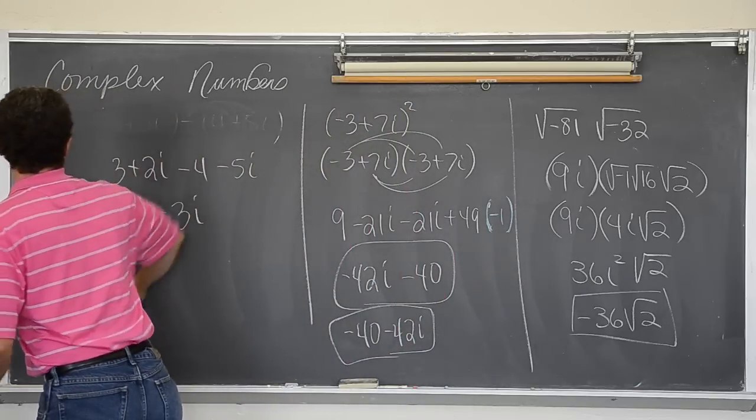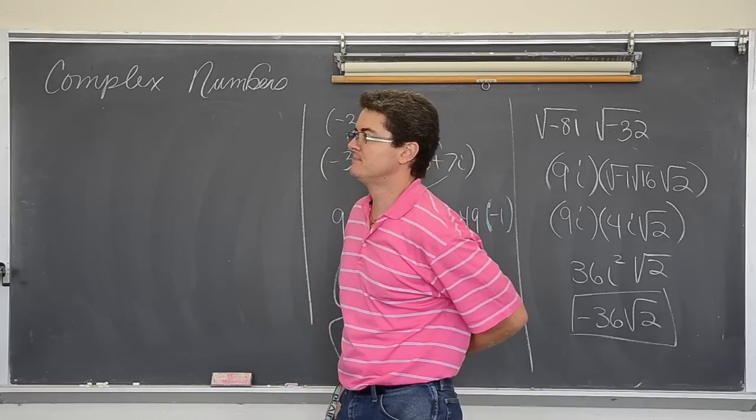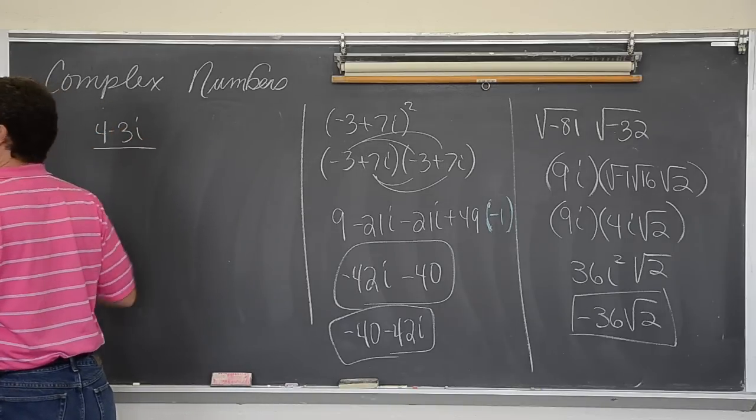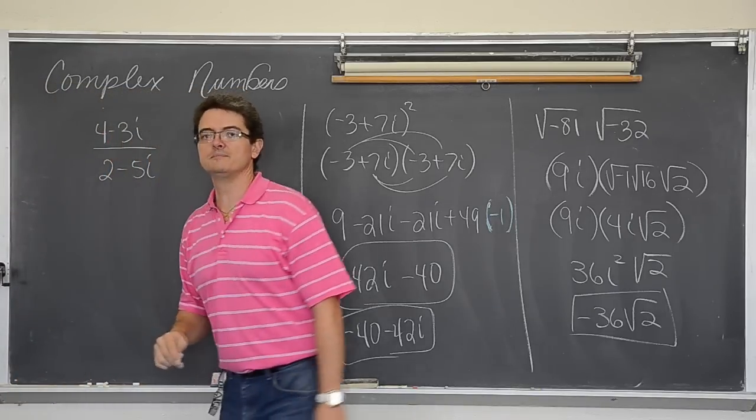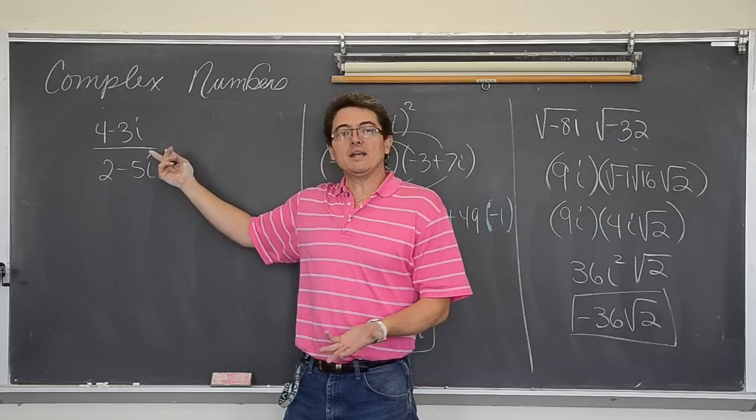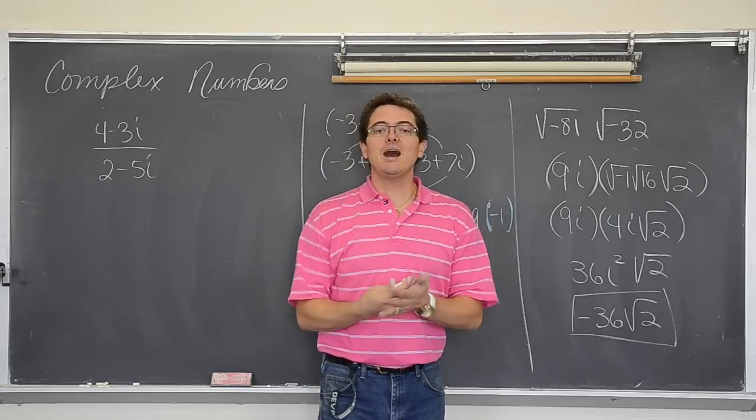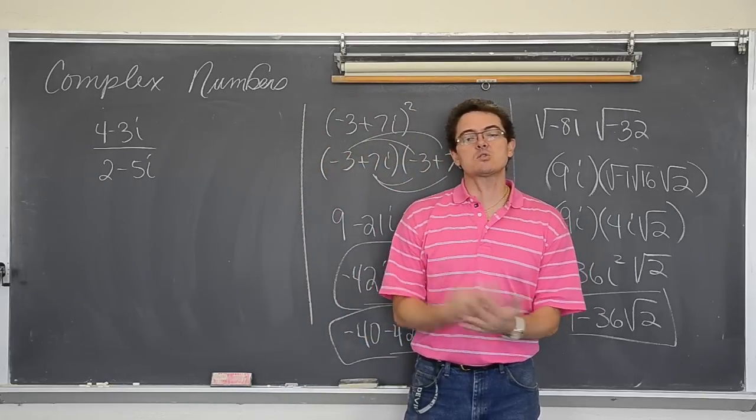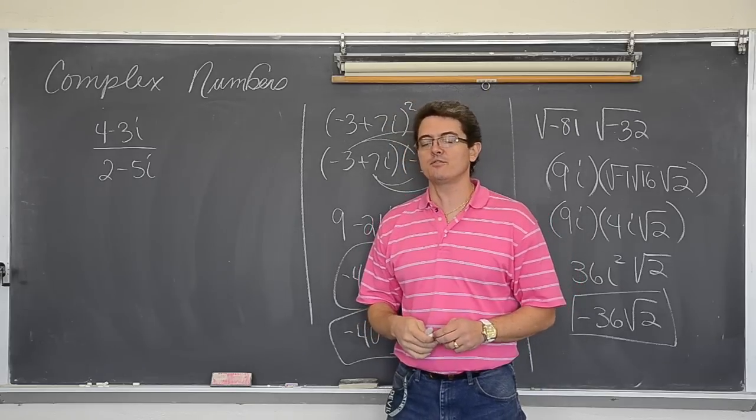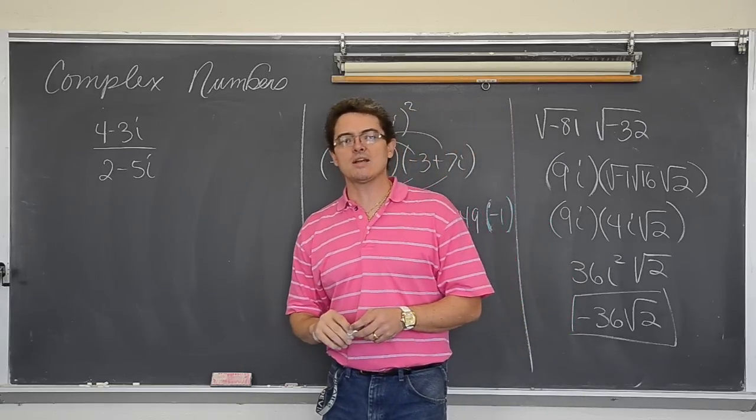Let's take a look at another example. 4 minus 3i over 2 minus 5i. Simplify this. Well it looks pretty simple already. If this were an x instead of an i, be done. But i is a square root, right? i is a square root of negative 1. And you can't leave a radical in the denominator if you are writing your final answer. So this, though it doesn't look like it, needs to be rationalized.